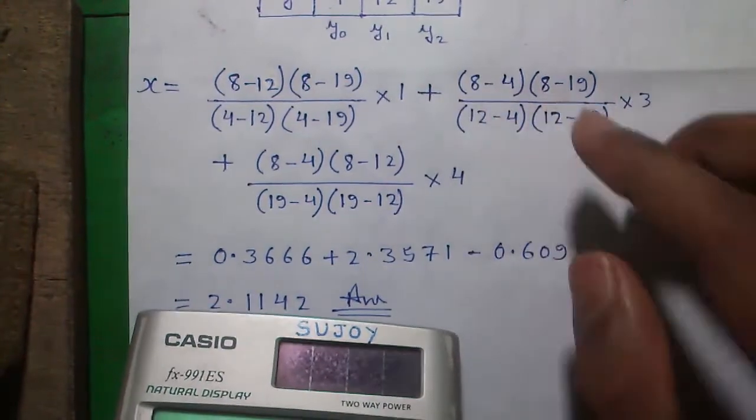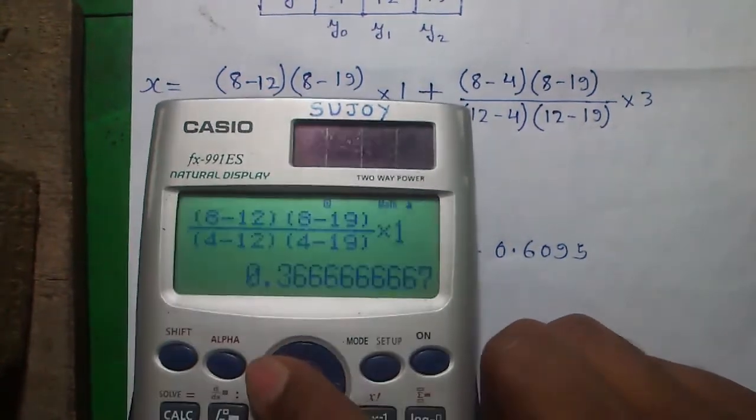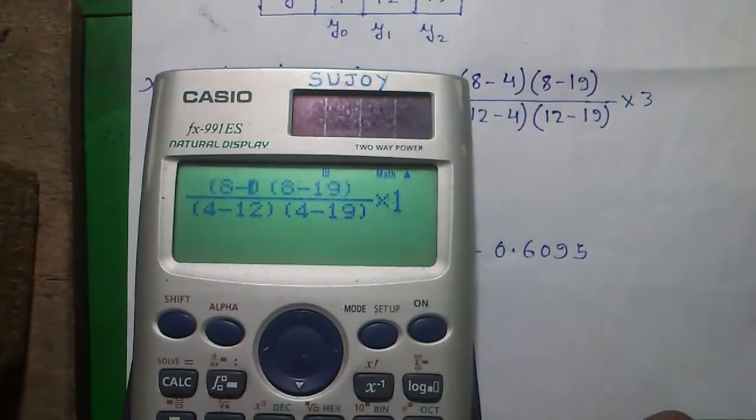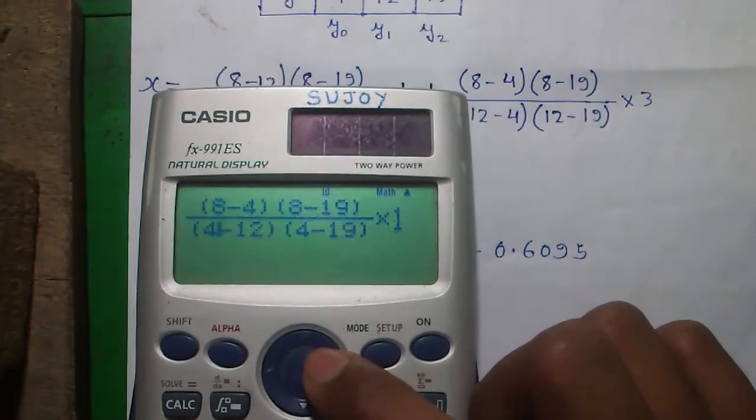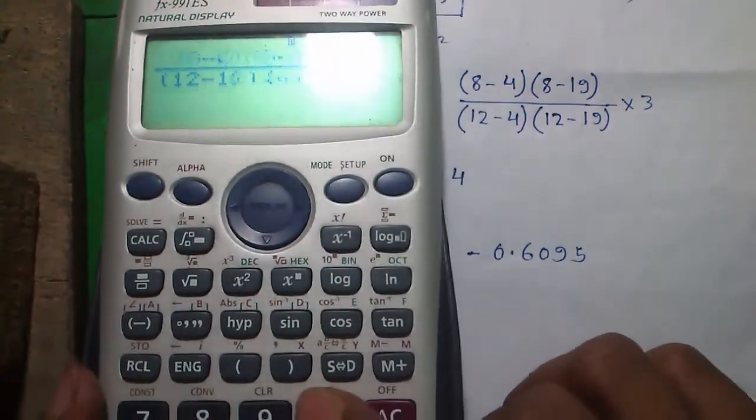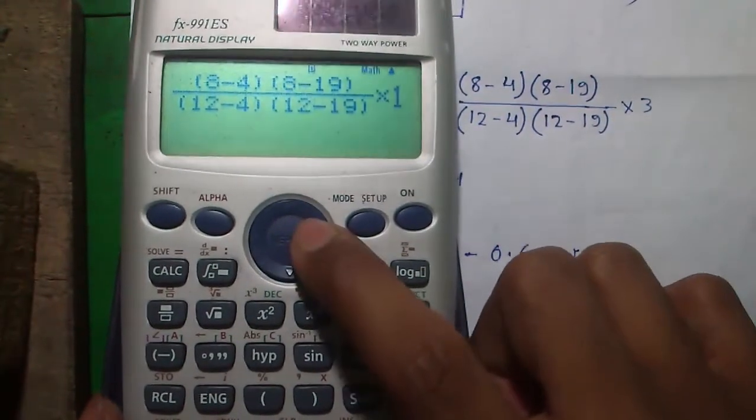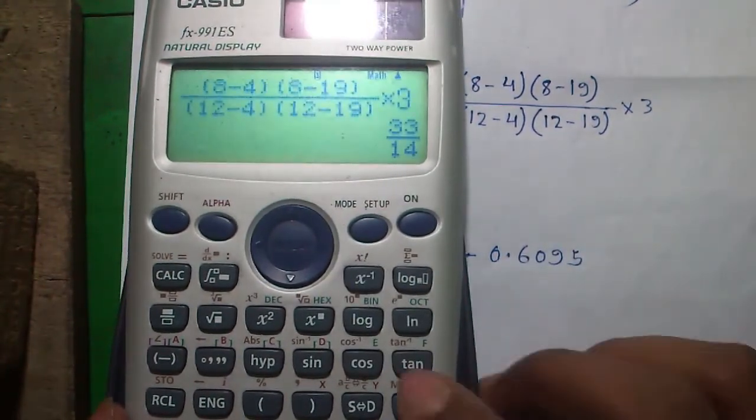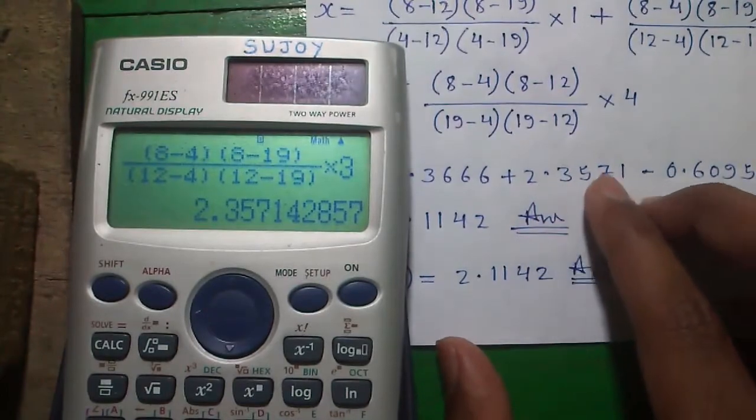Plus the next term. And the coolest part is for next term, we don't have to enter it again. We just use the existing expression, just change the values by joystick right or left. So 8 minus, 8 minus 19 is already there. Joystick down. And now, 12 minus 4. Use the del button to delete. 8, 4 and 12 minus 19 into 3. And press equals to, press S to D. That is 2.3571.